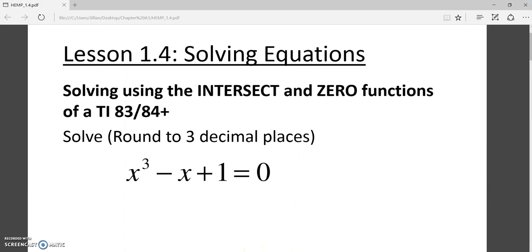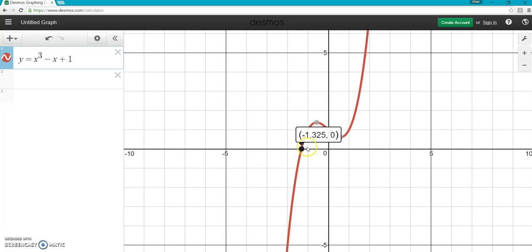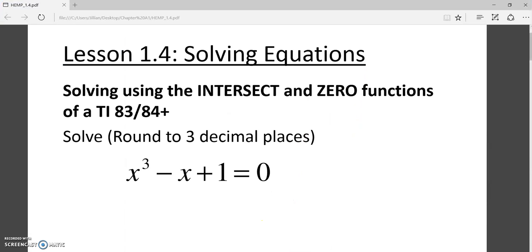Just like the problem says, always round to three decimal places. Even though the textbook says 2, you are required to round to 3 because that's what the AP Calc exam requires. So our solution, x = -1.325. That's one method to solve using a graphing calculator, the zero method.